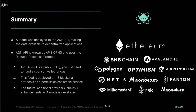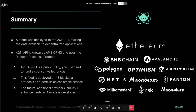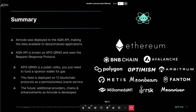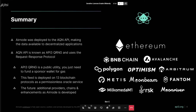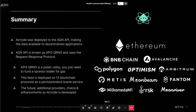Airnode was deployed to the AQRN API, making data available to decentralized applications. We refer to this as API3 QRNG. QRNG uses the request-response protocol to serve data from the ANU-deployed AQRN API and bring it on-chain on demand. We chose to deploy this as a public utility — the only cost for builders is a sponsor wallet for gas. It's been deployed to 13 blockchain protocols and is fully permissionless to access via the docs.